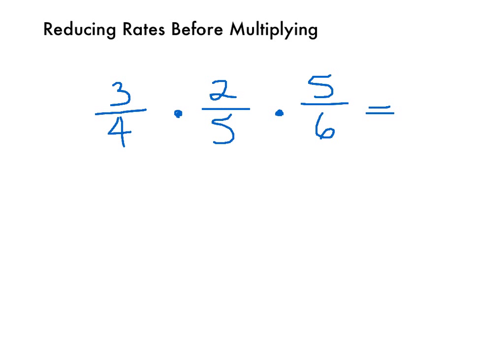Reducing rates before multiplying. We know that we can reduce fractions before multiplying. This is also called cancelling.